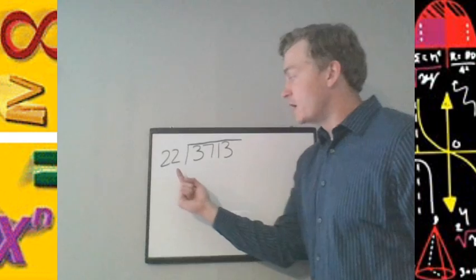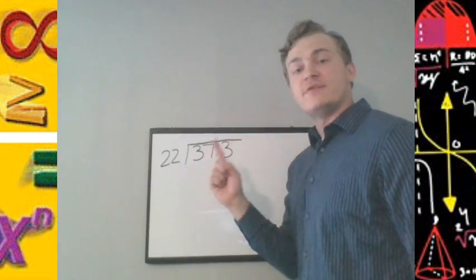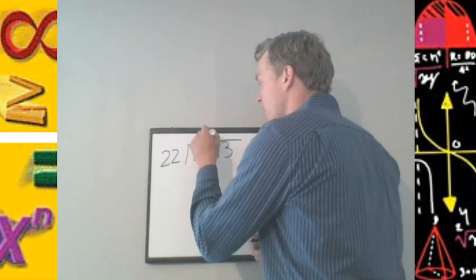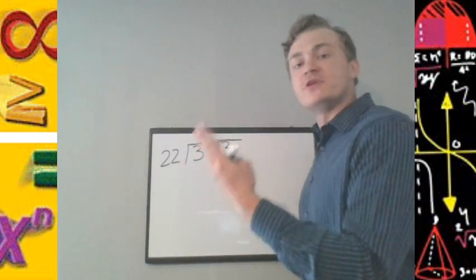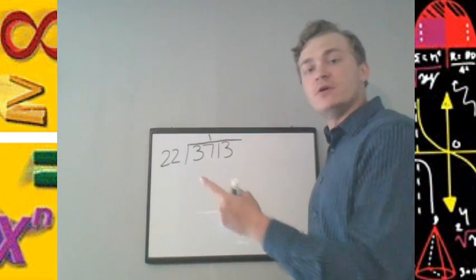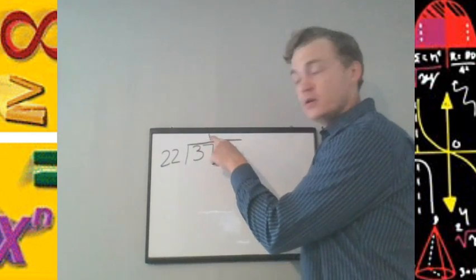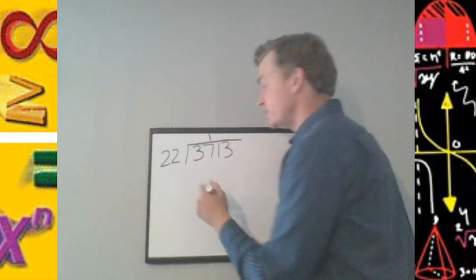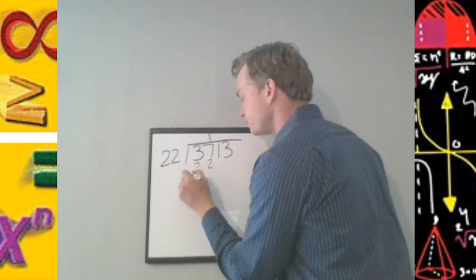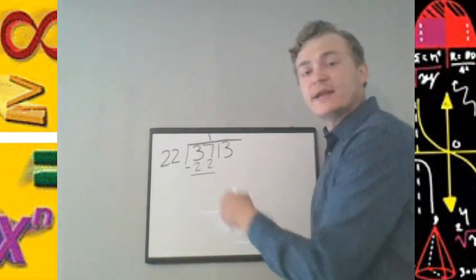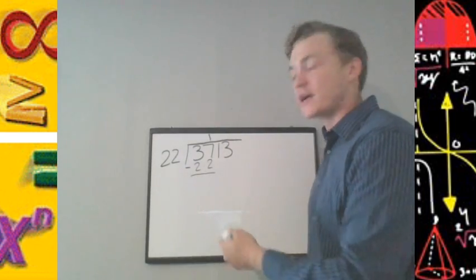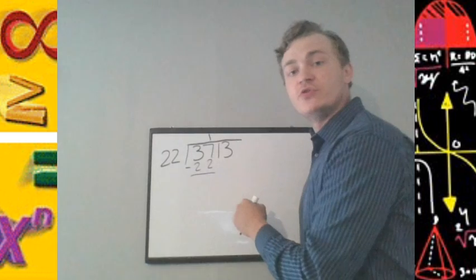3,700. The 22 divides into the 37 one time, right? 22, 44, 66, so we stop at 22. 22 times 1 is 22. So subtracting this, again, division is repeated subtraction. 37 minus 22 is 15.